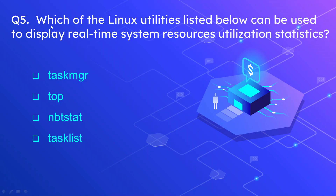Question number 5: Which of the Linux utilities listed below can be used to display real-time system resource utilization statistics? The options are task manager, top, nbtstat, and tasklist. The correct option is top. Top both displays resource utilization as well as running processes or running tasks.